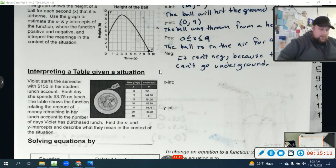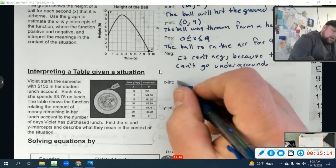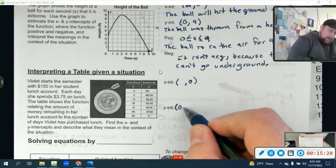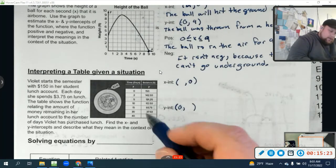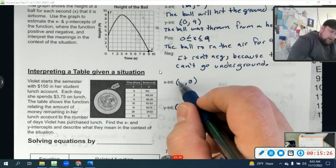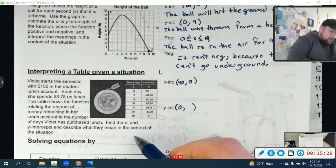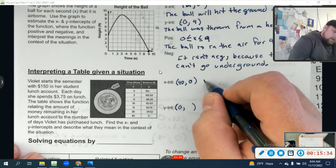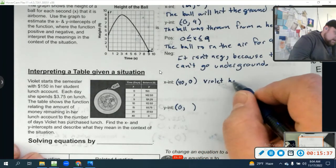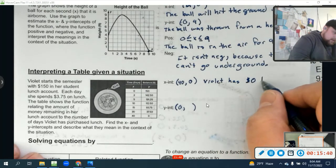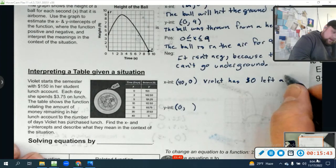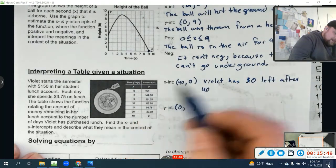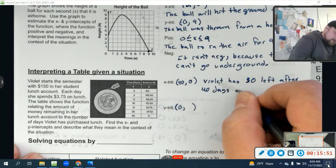Knowing that our x-intercept is always where y is 0 will help us. Where do we see y equals 0? Down here when x is 40. And what is that x-intercept telling us? This is saying Violet has zero dollars left after 40 days of buying lunch.